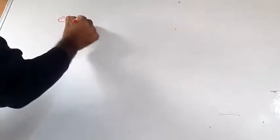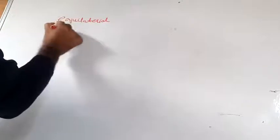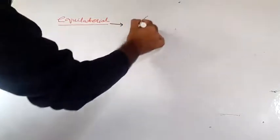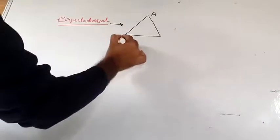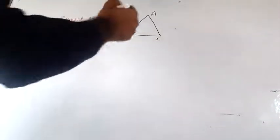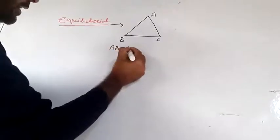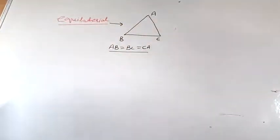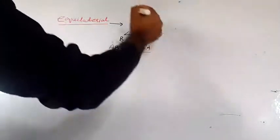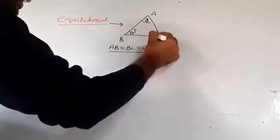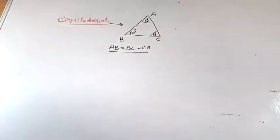Let's start with the equilateral triangle. In an equilateral triangle, all sides are equal. If we have triangle ABC where AB equals BC equals CA, this is an equilateral triangle. Each angle in an equilateral triangle is 60 degrees.